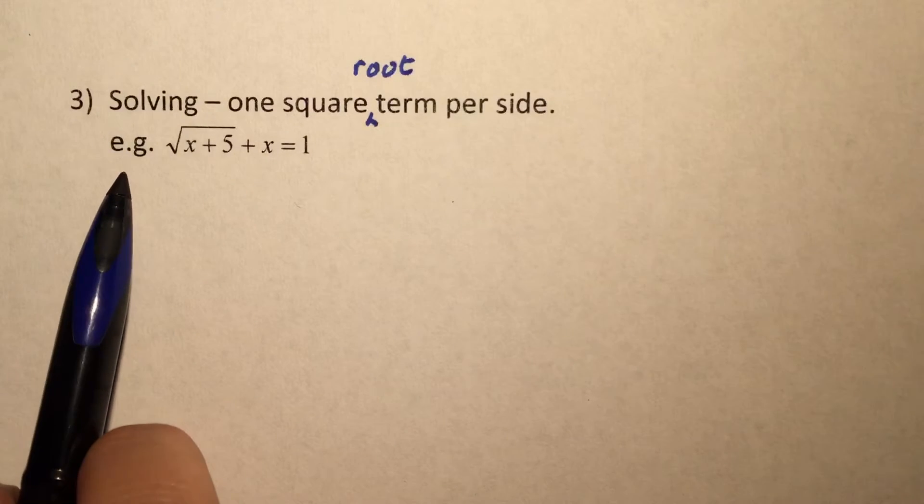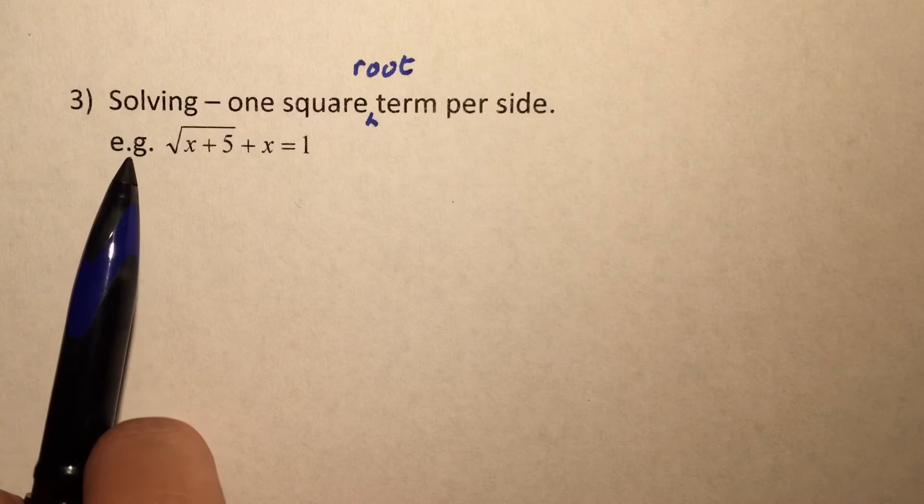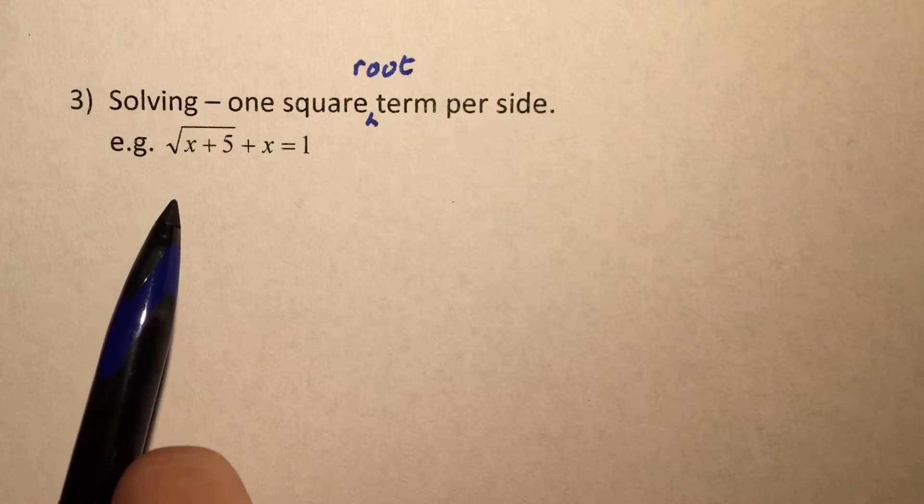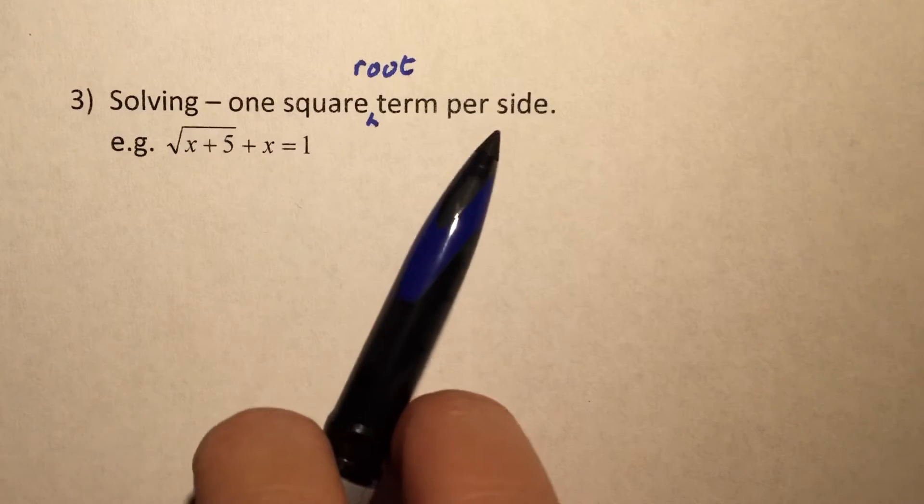Now, we are going to do the third type of sub-questions that we can encounter. It's the solving of sub-questions. And what we need to do is employ this strategy, which is one square root term per side.